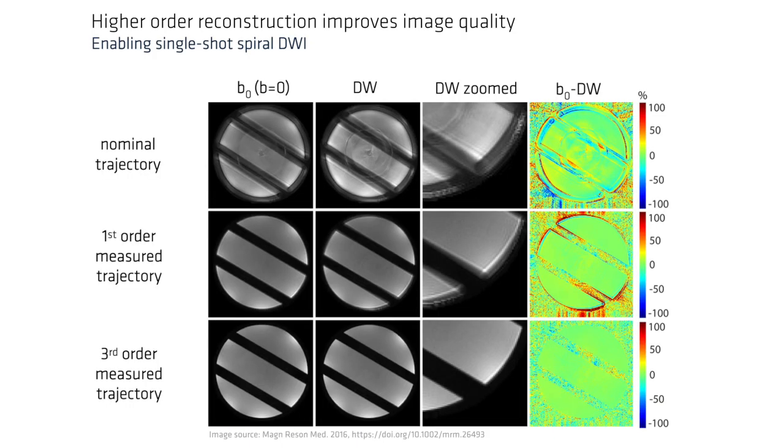In spiral imaging, the undesirable field terms result in blurred images. Here you can see the impact of using different measured field terms for reconstruction. Without any treatment of these undesirable field terms during reconstruction, the phantom is strongly blurred. First order correction reduces the blurring significantly. The blurring can be fully removed when also accounting for higher order fields.